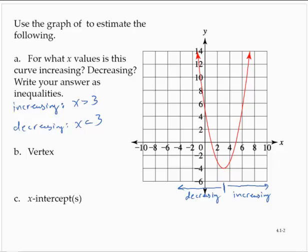The vertex is this point which is 3, negative 4.